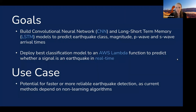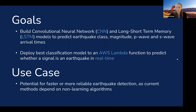The goal of this project was to build convolutional neural networks (CNNs) and long short-term memory networks (LSTMs) to predict earthquake class, magnitude, P-wave and S-wave arrival times. I also wanted to deploy the best classification model to an AWS Lambda function to predict whether or not a signal was an earthquake in real time. The use case is that there is a potential for faster or more reliable earthquake detection, as current methods depend on non-learning algorithms.